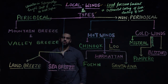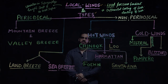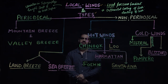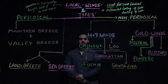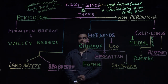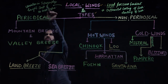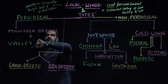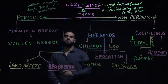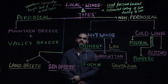Thus, we can say local winds are generated due to change in the local pressure gradient, due to the differential rate of heating and cooling of the earth's surface, which can be because of variation in topography — that is, the height and shape of the earth's surface.